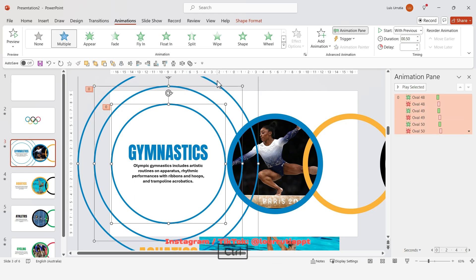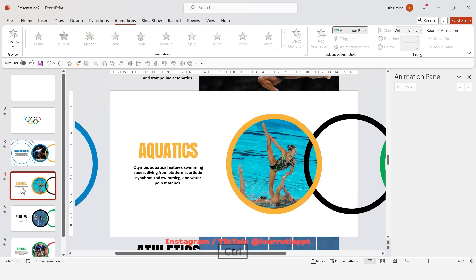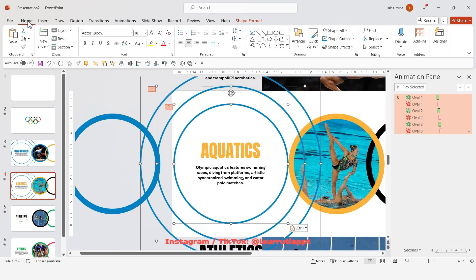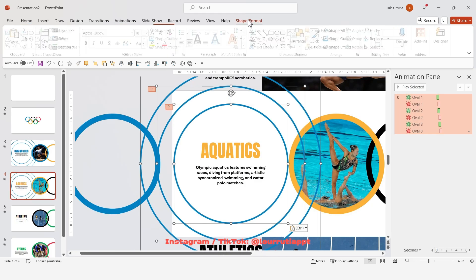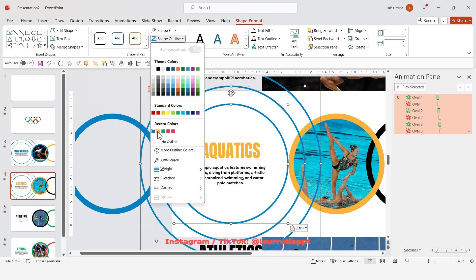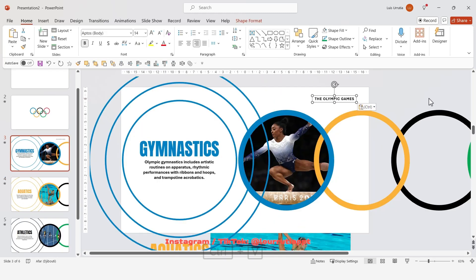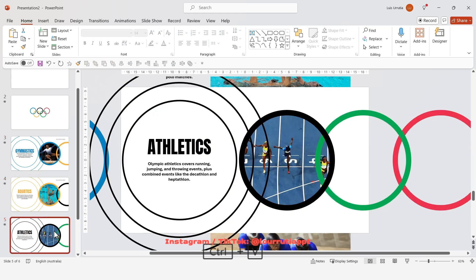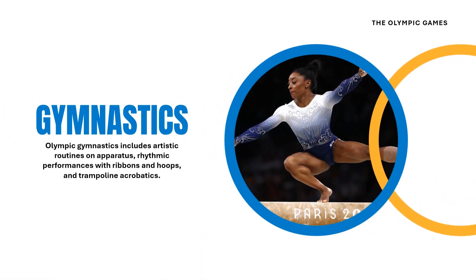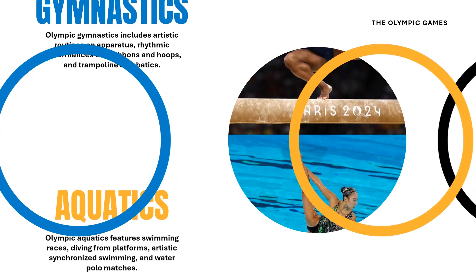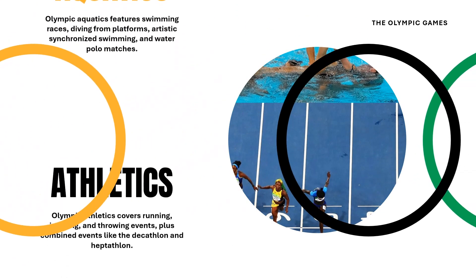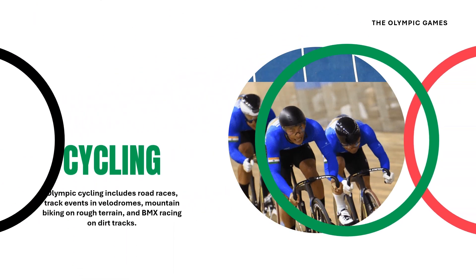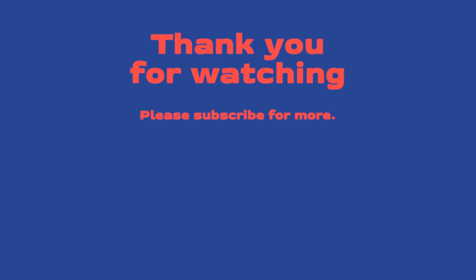Holding Shift, select all of the circles and copy them with Ctrl+C. Go to the next slide, paste with Ctrl+V, then go to Shape Format and on Shape Outline change the color to the next ring color. Once you've added the circles to all of your slides, add the title of your presentation to every slide in the top-right corner. Make sure Morph is applied to all your slides and you're done. You can download this presentation from my website — the link is in the description. If you liked this tutorial give it a thumbs up, subscribe, and check out these other two tutorials. See you soon!